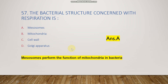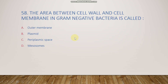The next question: the area between the cell wall and cell membrane in gram-negative bacteria is called the outer membrane, plasmid, periplasmic space, or mesosome? The right answer is periplasmic space, which is present between the cell wall and cell membrane.